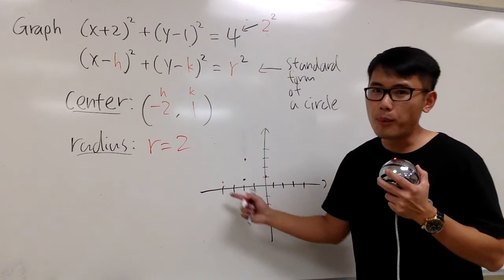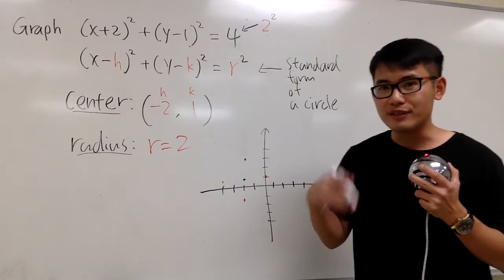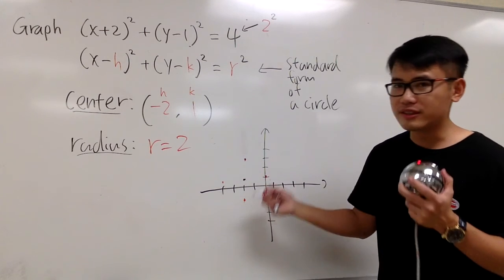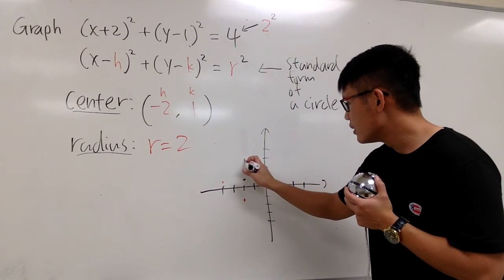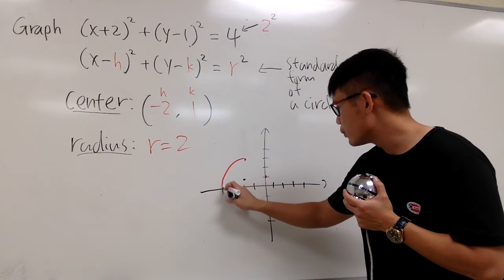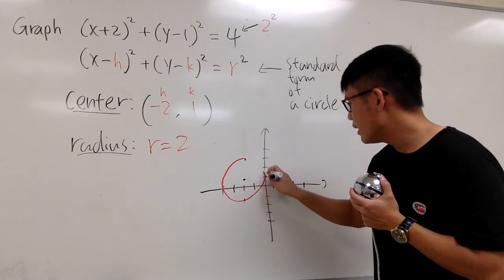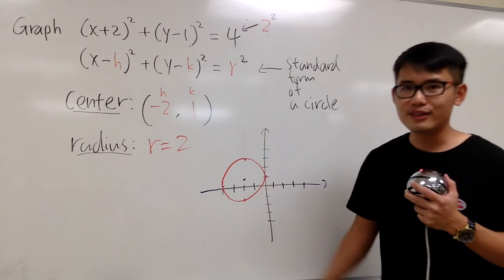And right here, the 4 points is just going to help us to graph a circle. You don't connect the dots with a diamond. It's going to be a circle, so you just go ahead, you connect the dots with a circle, like this. And that's it.